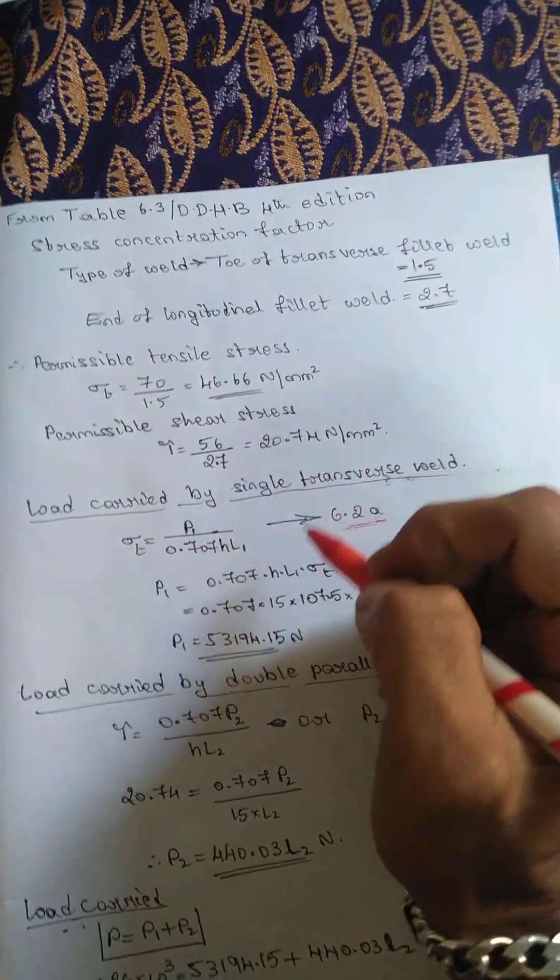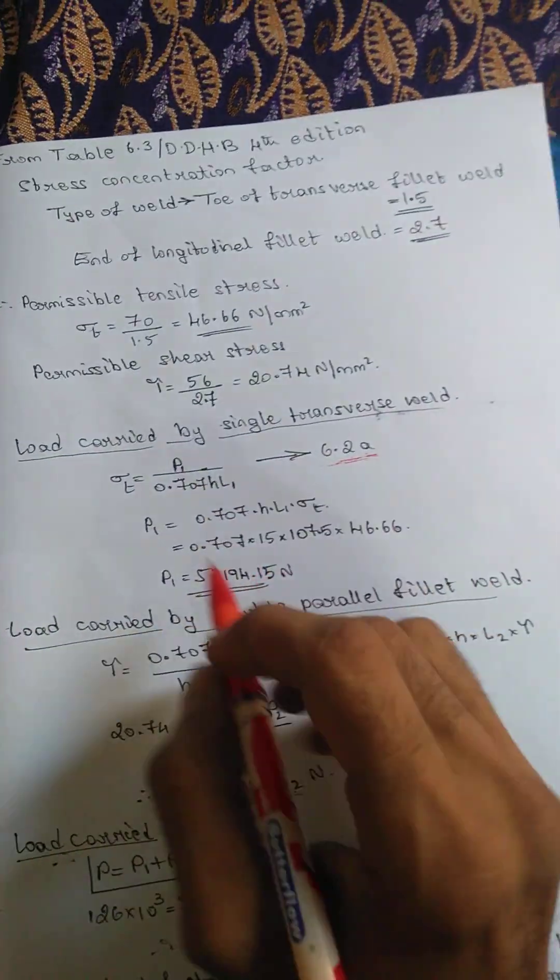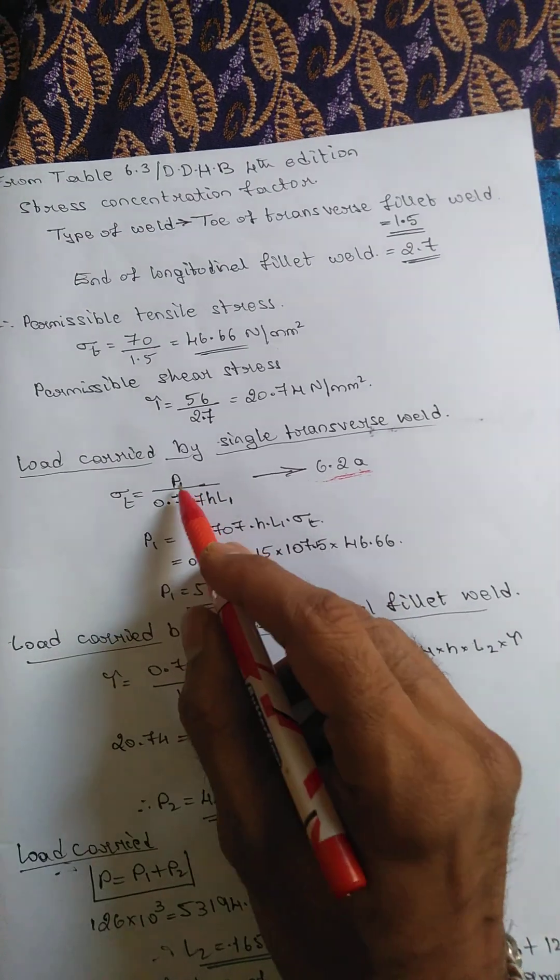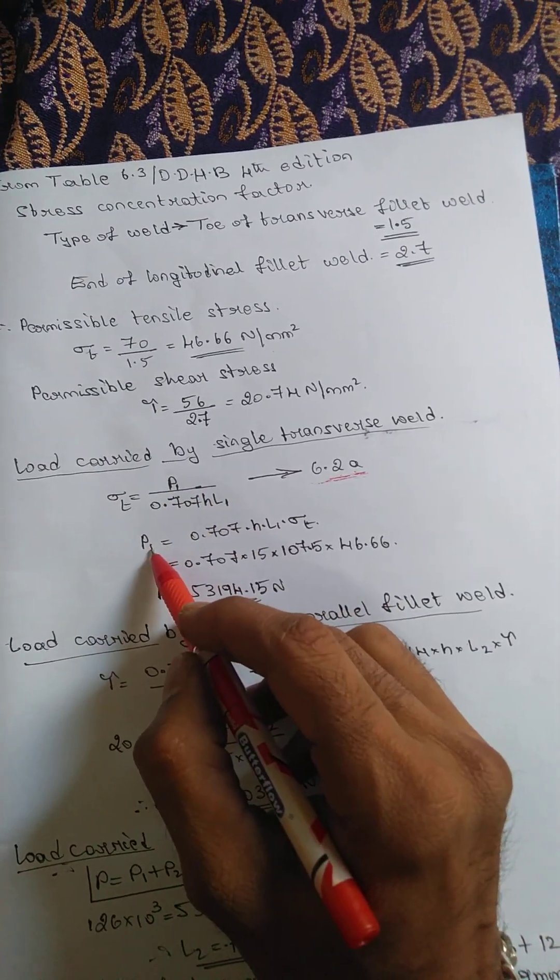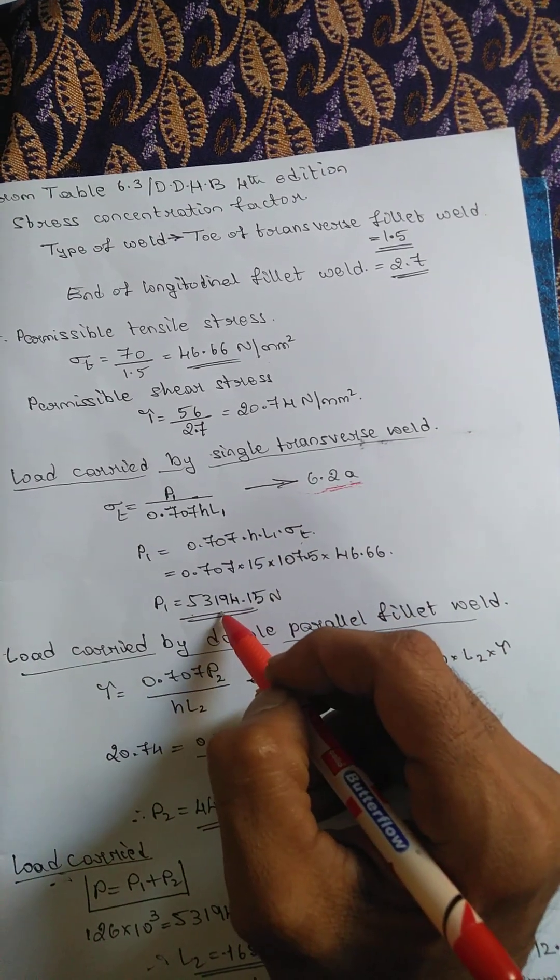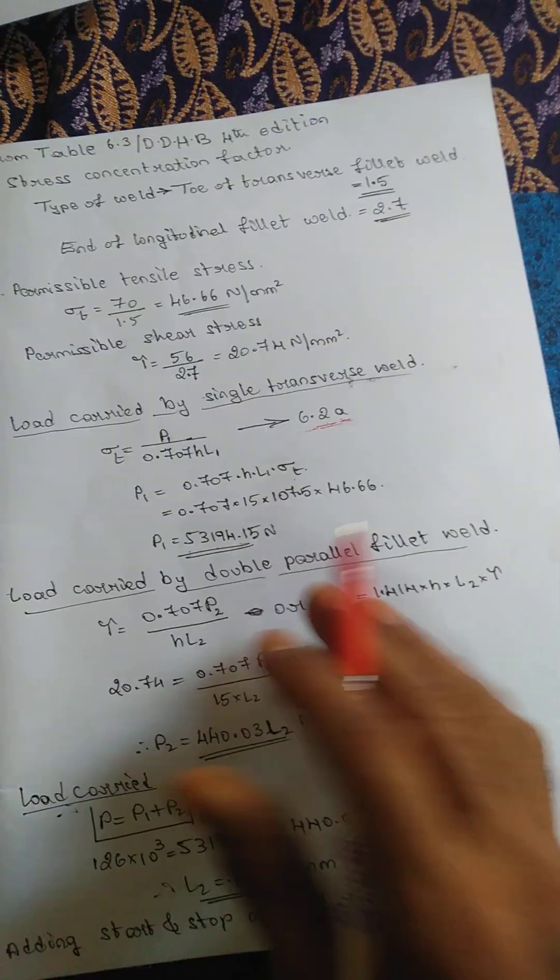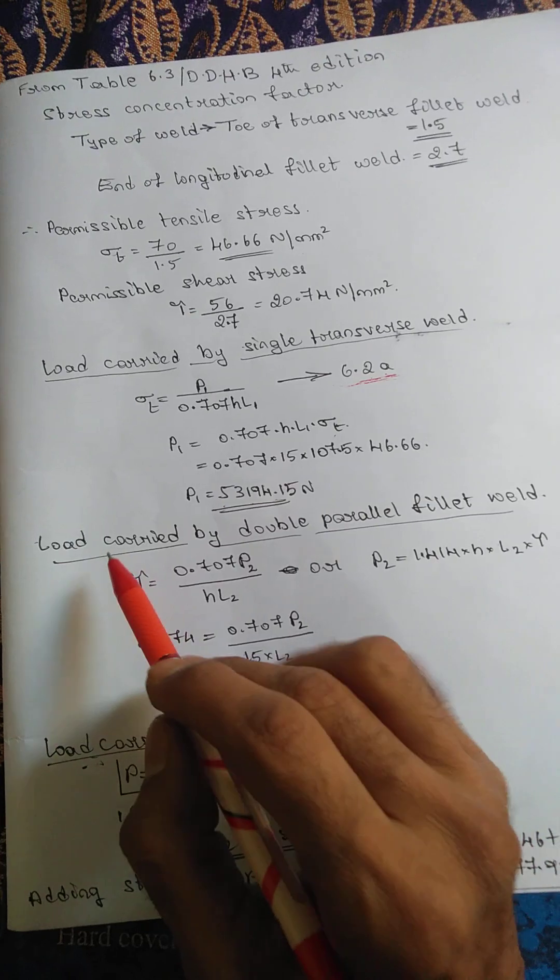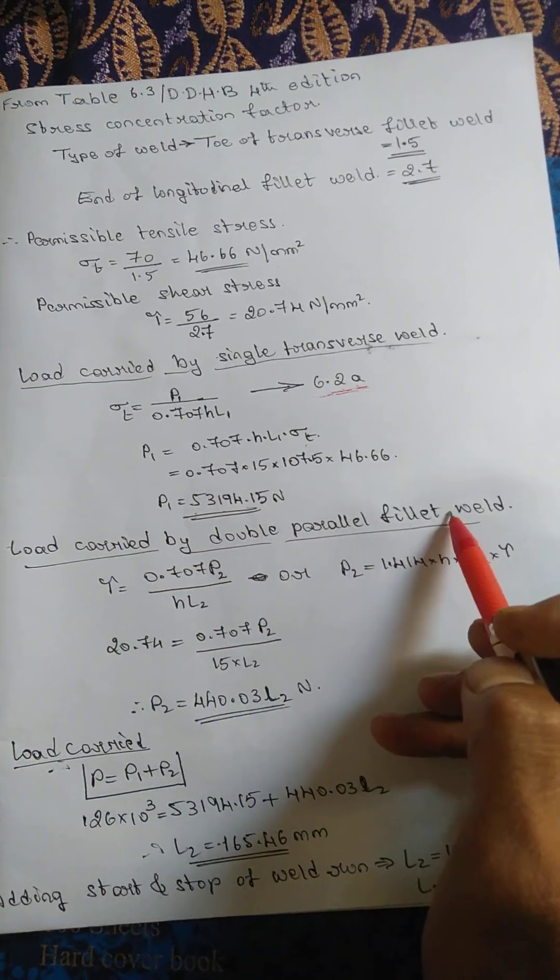Whenever you write the symbols here, write according to the data handbook so that you can apply or substitute the values easily. This is the one. After substitution and calculation, will get P1 as 53194.15 newton.